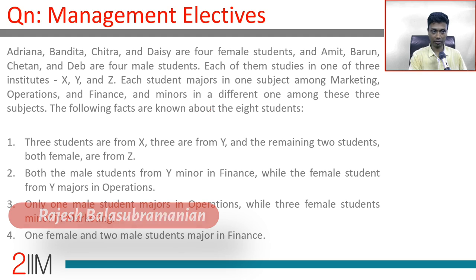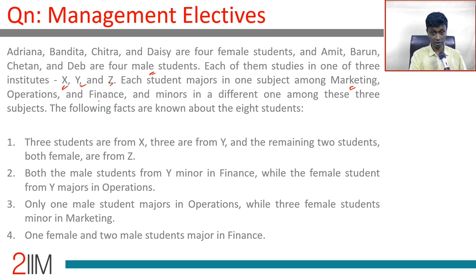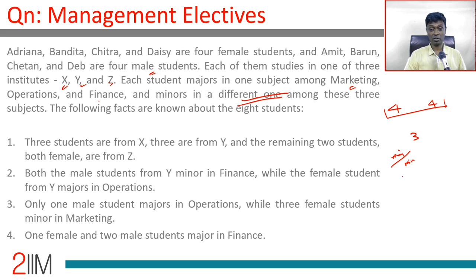Let's read the problem. Adriana, Bandita, Chitra, and Desi are four female students. Amit, Barun, Chetan, and Deb are four male students. Each of them studies in one of three institutes — X, Y, and Z. Each student majors in one subject among Marketing, Finance, and Operations, and minors in a different one. Three students are from X, three are from Y, and the remaining two — both female — are from Z.